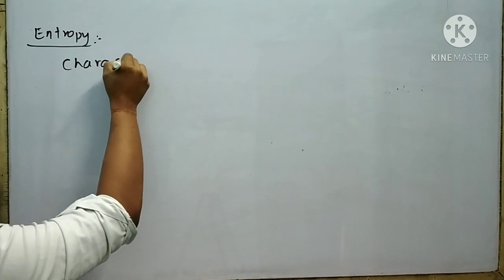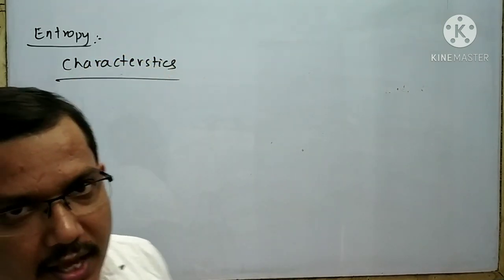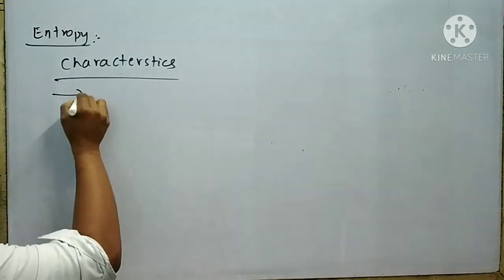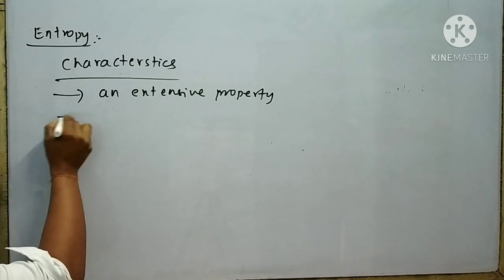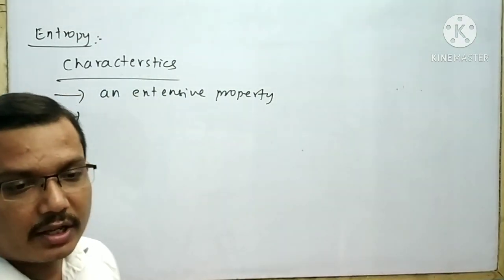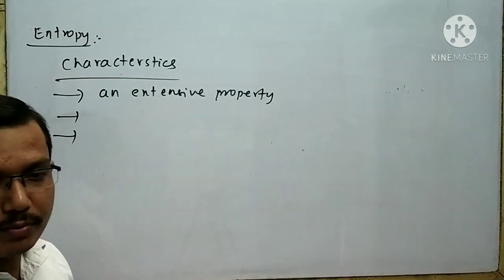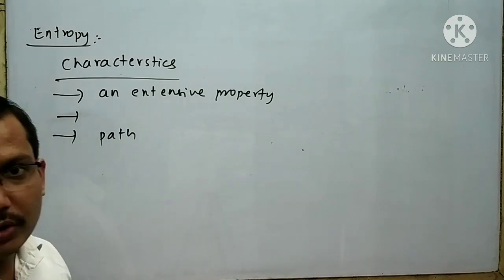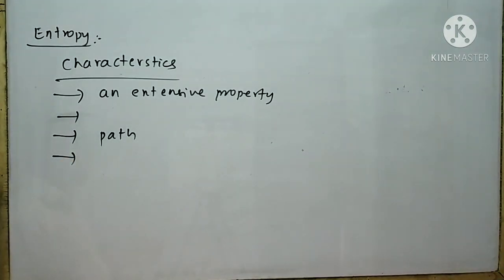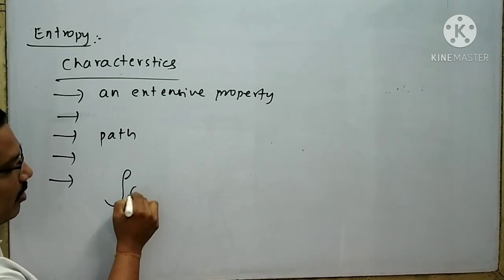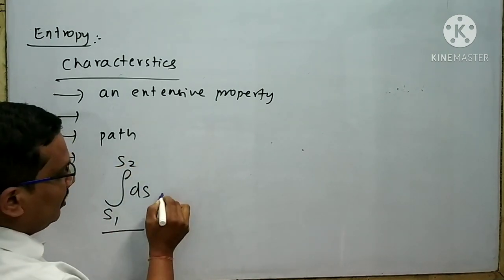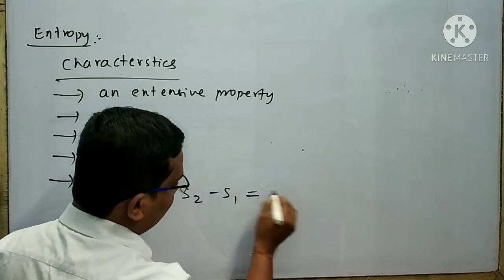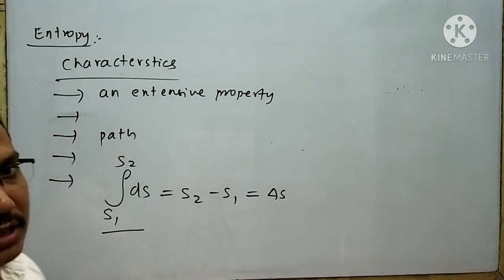The characteristics of entropy are: first, entropy is an extensive property; second, entropy is a state function; third, the value of entropy is independent of the path followed; fourth, the absolute value of entropy cannot be evaluated; and fifth, it has an exact differential, meaning ∫dS from S₁ to S₂ = S₂ − S₁ = ΔS.